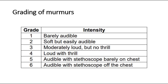Grade 1 is where the murmur is barely audible. Grade 2 is a soft murmur but easily audible. Grade 3 is moderately loud but with no thrill. Grade 4 is where there is a palpable thrill on the chest. Grade 5 is where with the stethoscope barely on the chest we can already hear the murmur. Grade 6 is the loudest, where we don't even need a stethoscope to hear the murmur.